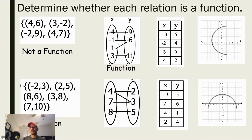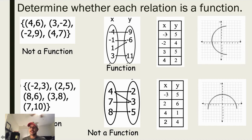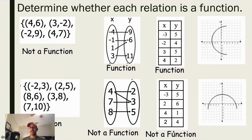Note that it does not matter that negative 6 has more than one arrow pointing to it — we're only concerned about x values having more than one y. In the second mapping diagram, 4 has two arrows coming off of it, meaning it maps to two different values, so this is not a function. Looking at the tables: the first table has x values of negative 3, negative 2, 3, and 4 — all different, so it's a function. The second table has a repeated x value of 2, so it's not a function.